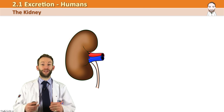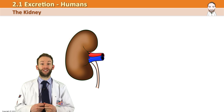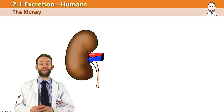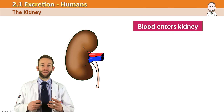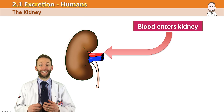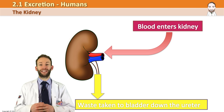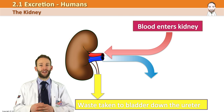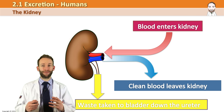By now you should know the basic structure of the urinary system and the gross structure of the kidney. Every day your blood passes through your kidneys about 400 times. The blood enters the kidney via the renal artery, the waste is filtered out and leaves via the ureter, and the clean blood leaves via the renal vein. But what is actually happening inside the kidney for that to happen?